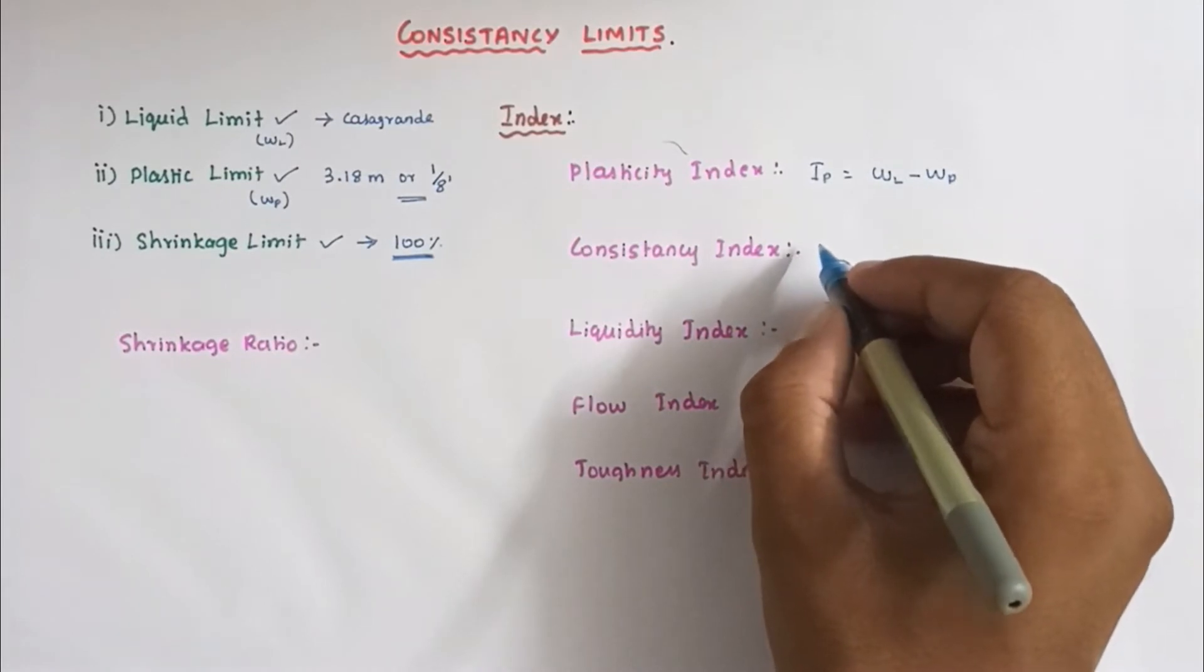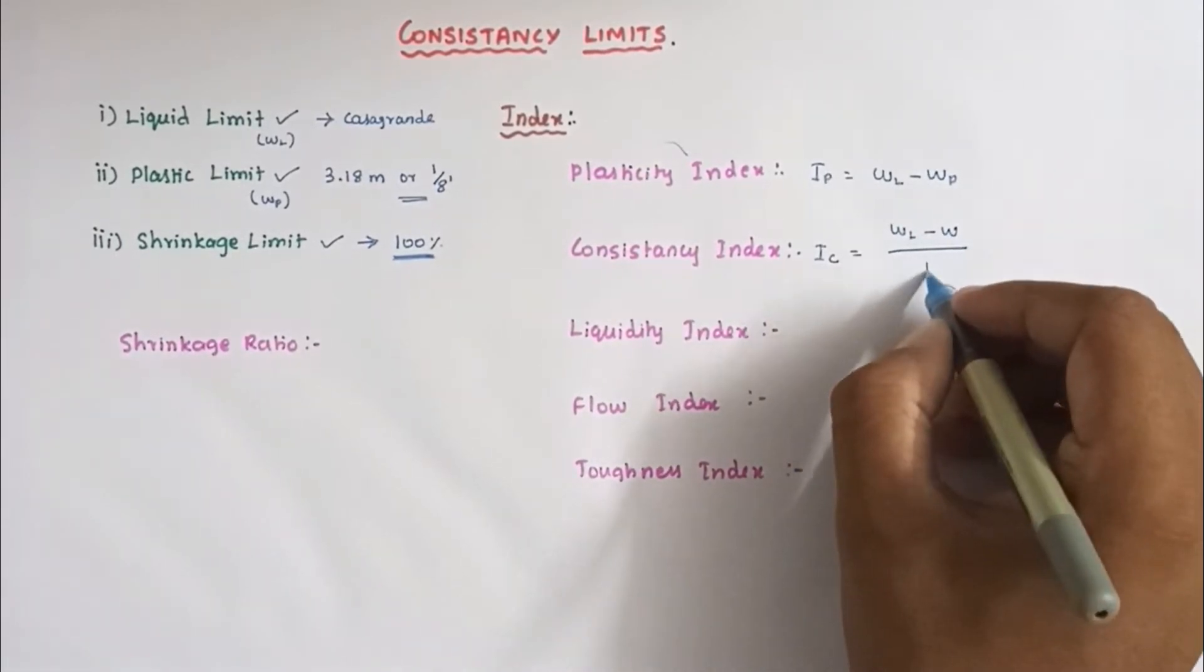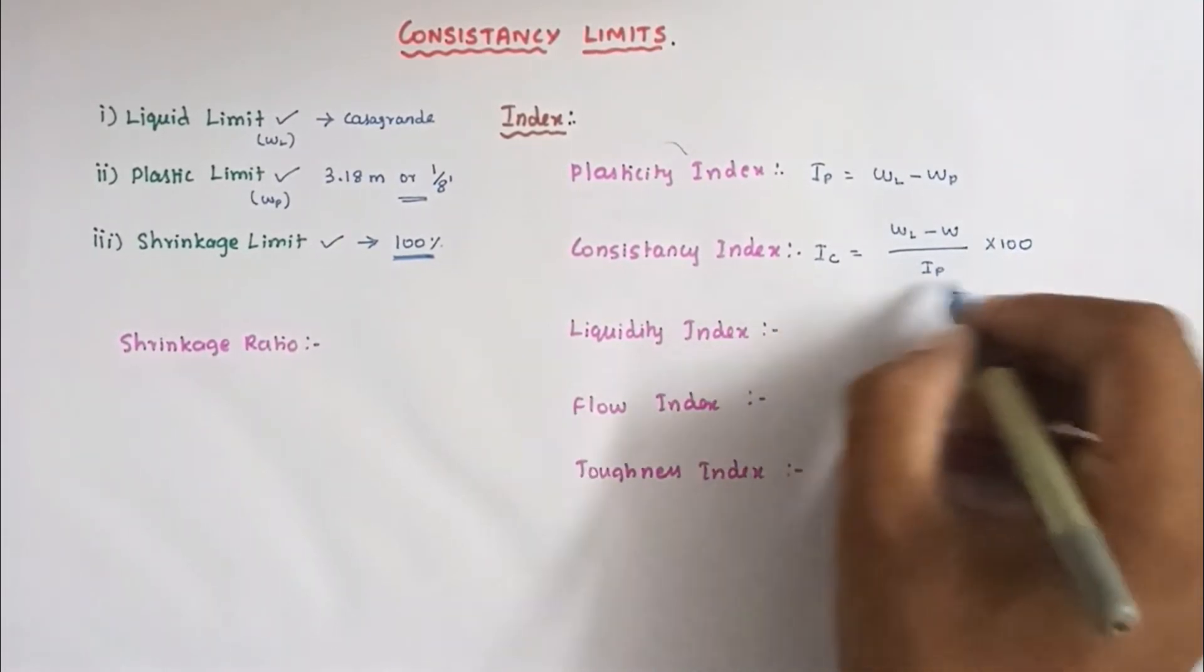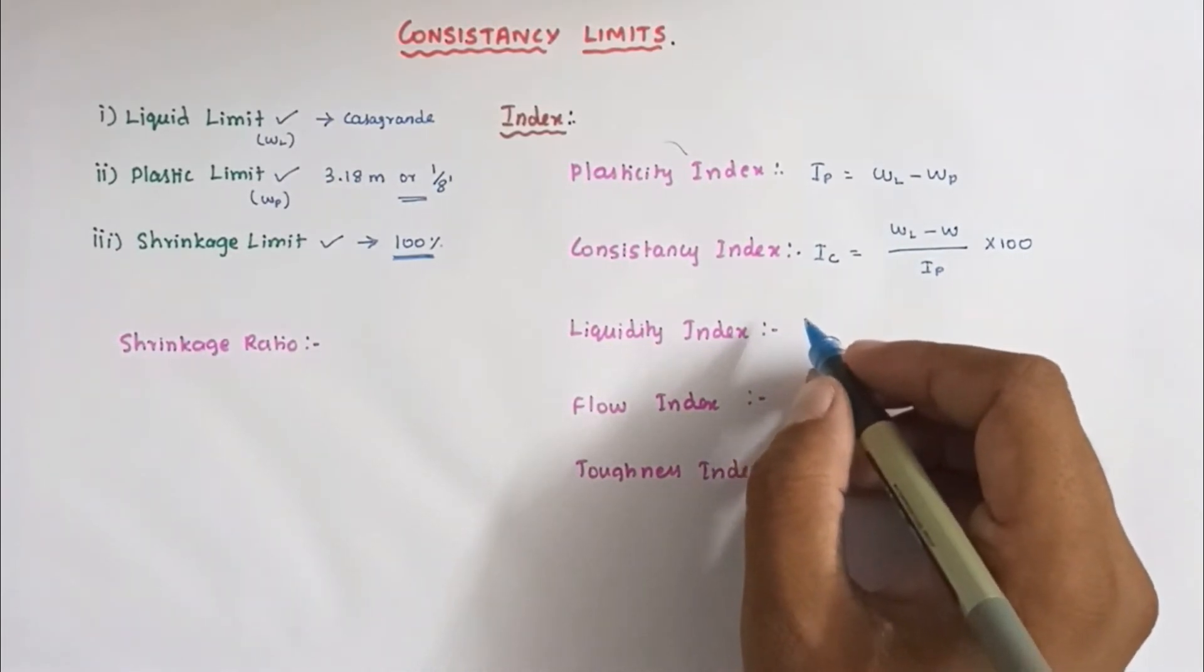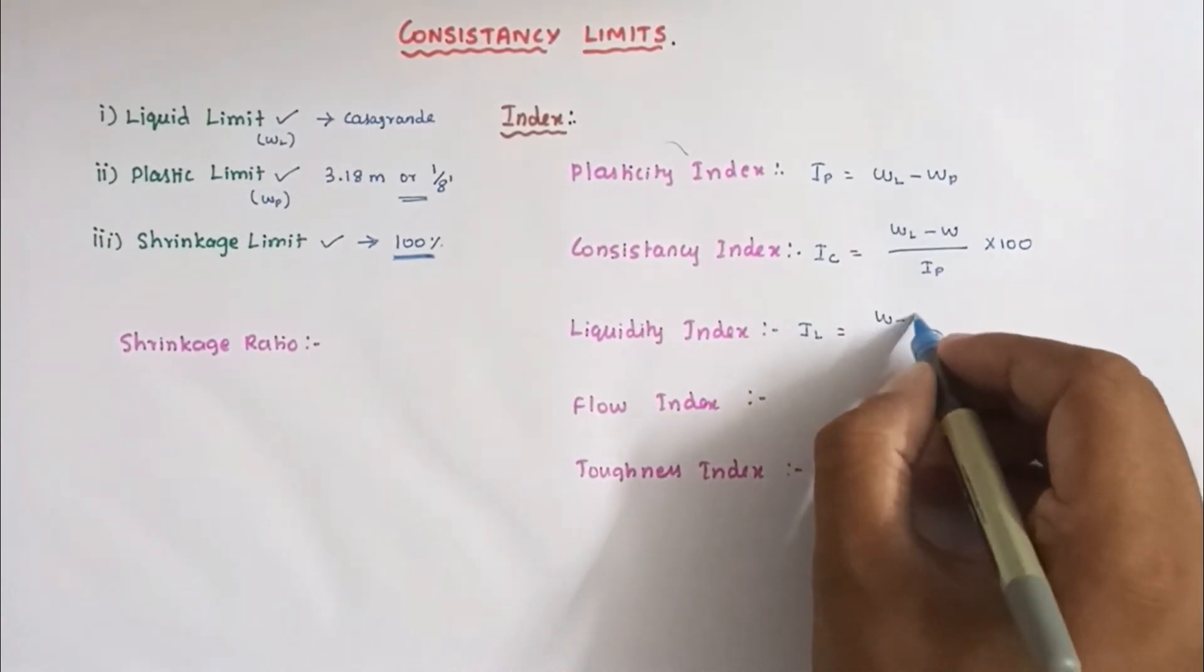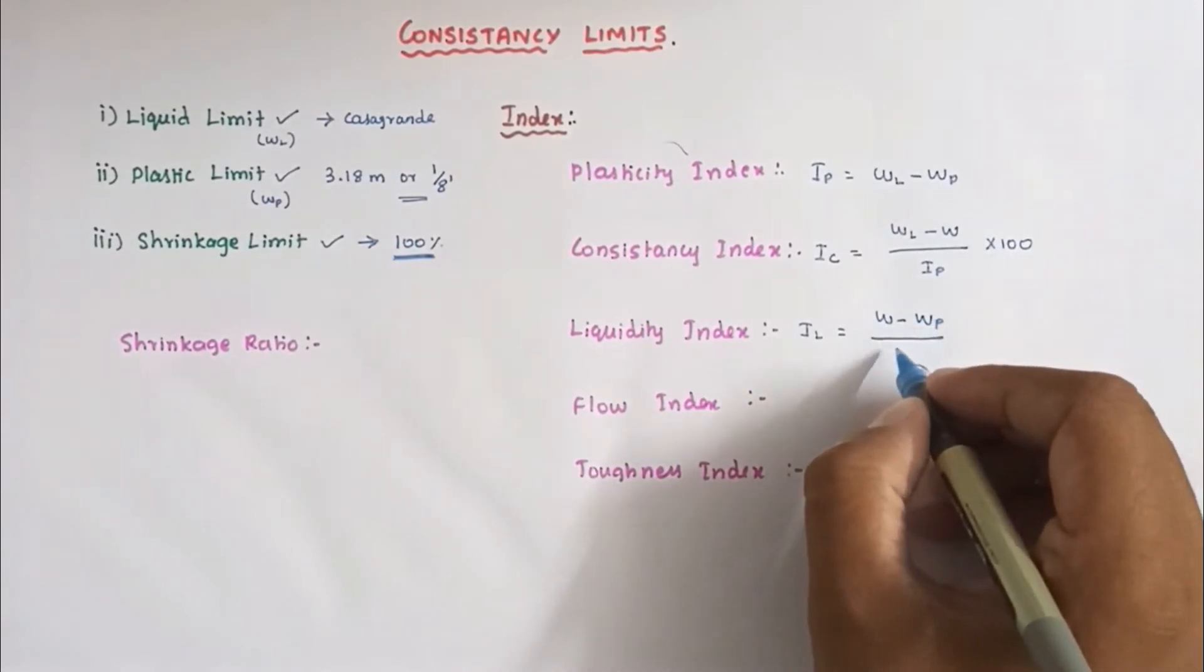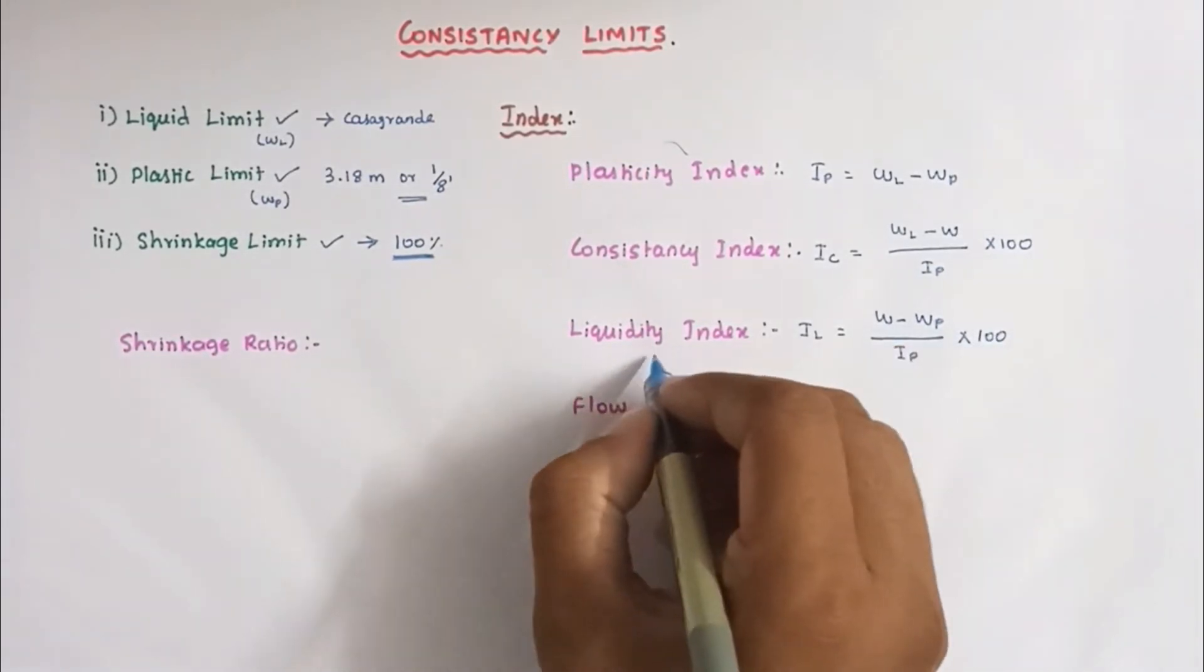Next, consistency index. The consistency index is denoted as IC: WL minus water content divided by IP. IP is plasticity index into 100. This is the liquidity index formula.